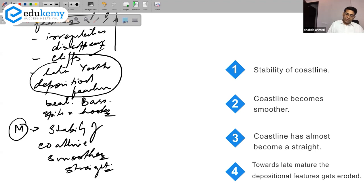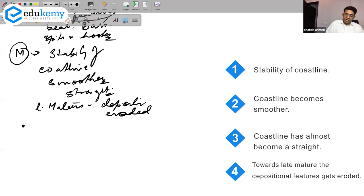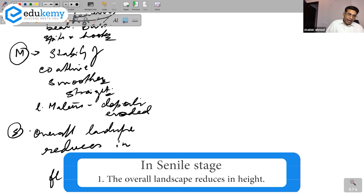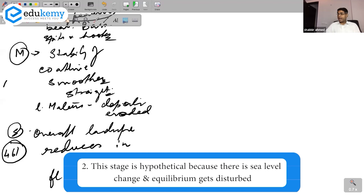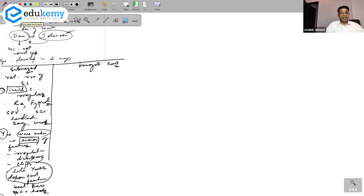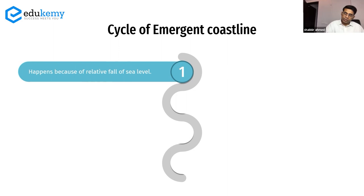In the mature phase, there is stability of the coastline — it has become smoother and almost straight. Towards late mature, the depositional features also get eroded. In the senile stage, the overall landscape reduces in height and becomes flatter. However, the textbook (page 461, last paragraph) notes that the senile stage is hypothetical because sea level fluctuations generally disrupt cyclic progression before it is reached.